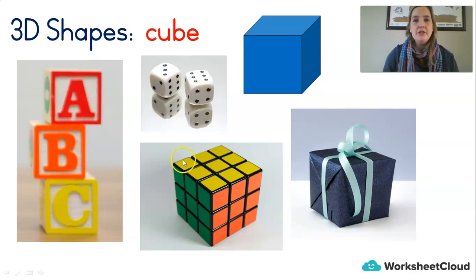And if you look around you, you'll see these squares. You could see it on a Rubik's cube, on a dice, maybe a present that you've got, or some blocks if you've got a younger sibling around the house. So we've talked about squares, and now we know the 3D partner for a square is called a cube.